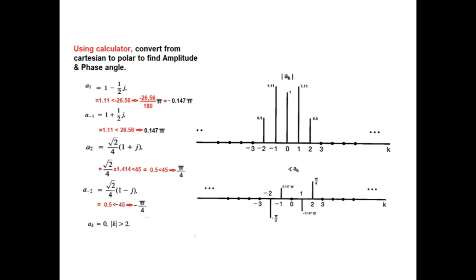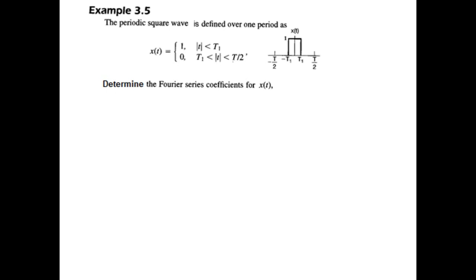Similarly, at A2, it is pi by 4. So at A2, pi by 4. And at A minus 2, it is minus pi by 4. So this is the phase angle plot. Okay.